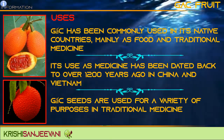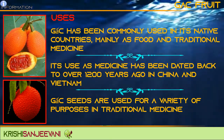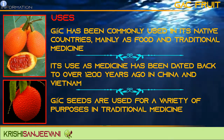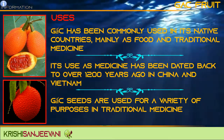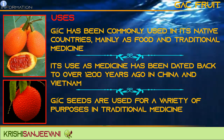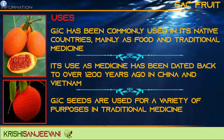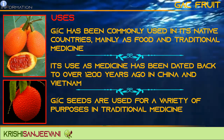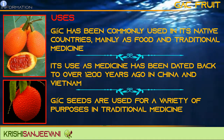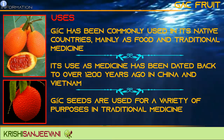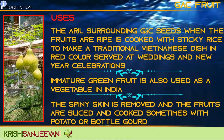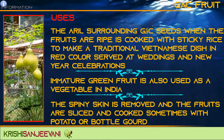Gac has been commonly used in its native countries mainly as food and traditional medicine. Its use as medicine has been dated back to over 1,200 years ago in China and Vietnam. Gac seeds are used for a variety of purposes in traditional medicine.